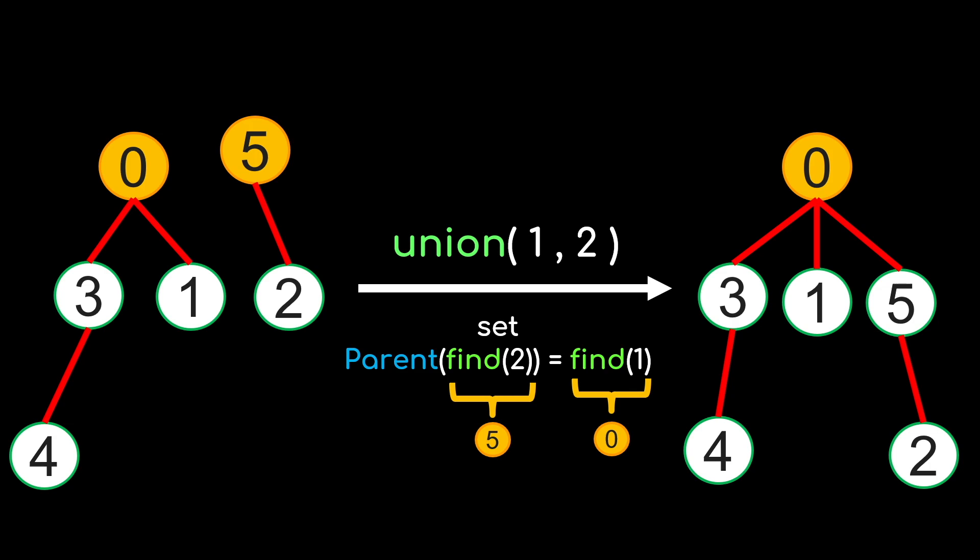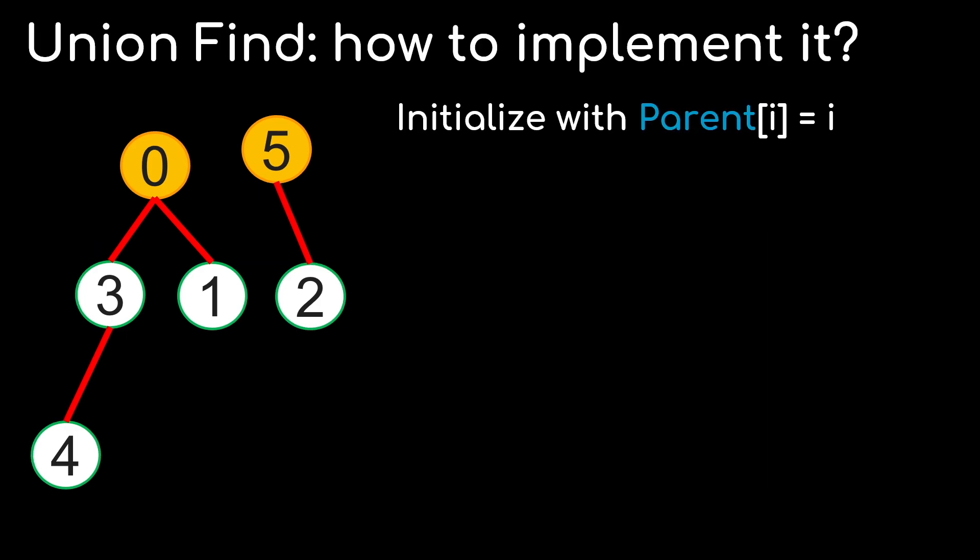For example, suppose we want to union 1 and 2. 5 is the root of 2, which we can get by calling find of 2. And similarly, 0 is the root of 1. We then set the parent of 5 to be 0. And what this does is that it sets 5, which used to be a root, now as a child of 0. And all of the elements that used to be in the tree rooted at 5 now have a root of 0. And now these two trees have been unioned.